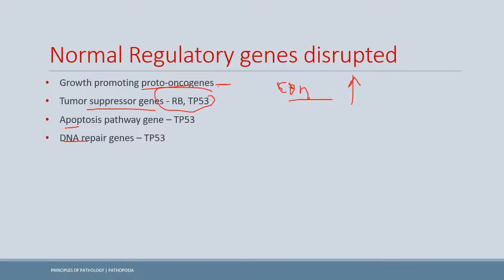The most important tumor suppressor genes are the retinoblastoma gene and TP53. TP53 is also a DNA repair gene and an apoptosis gene. Apoptosis leads to programmed cell death of mutated cells. DNA repair is important for repairing mutated DNA, and thus again prevents tumor formation.